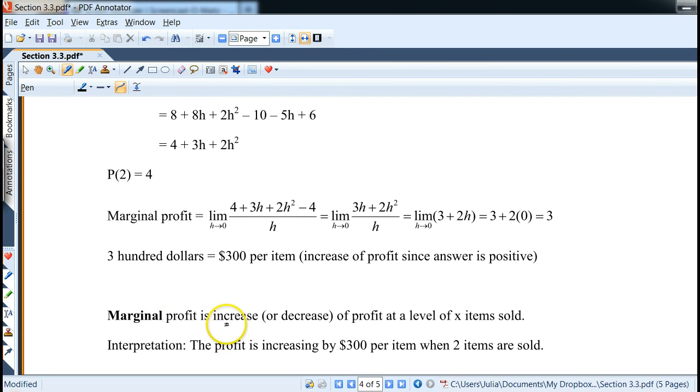So marginal profit is defined as increase, if it's positive, or decrease, if it's negative, of profit at a level of x item sold. So it would be different if you sell more or less. So interpretation of this question, which is also very important. The profit is increasing, because it's positive, by $300 per item when two items are sold. And that's kind of the idea here.